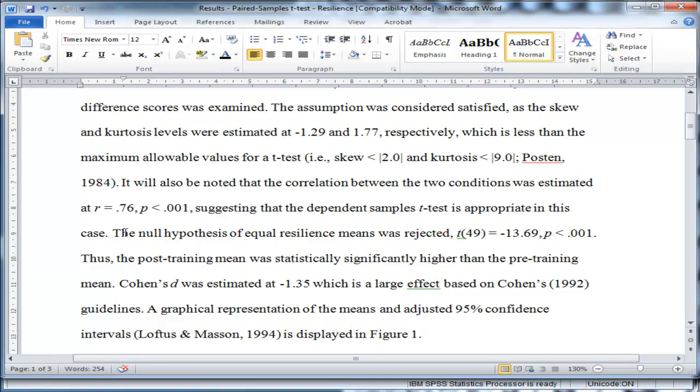Okay, so now that I've tested the assumptions and I'm satisfied with them, I go into the null hypothesis of equal resilience means was rejected. I've done the paired sample t-test now. And here's the t with 49 degrees of freedom, and negative 13.69 is the actual t value, and p less than .001.